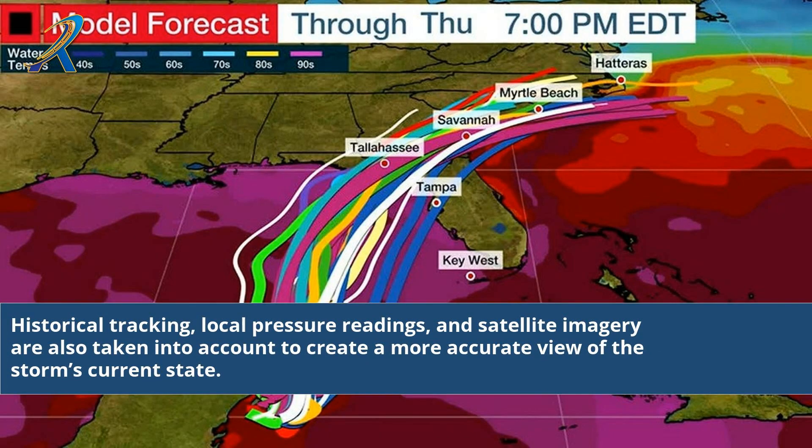Historical tracking, local pressure readings, and satellite imagery are also taken into account to create a more accurate view of the storm's current state.